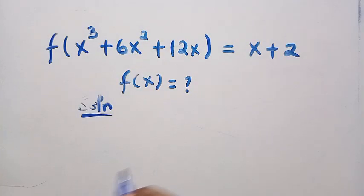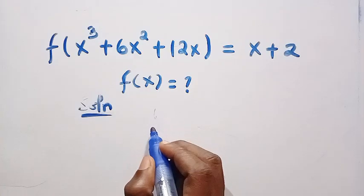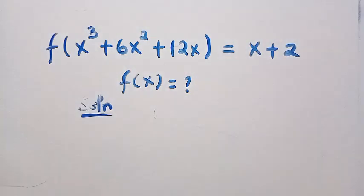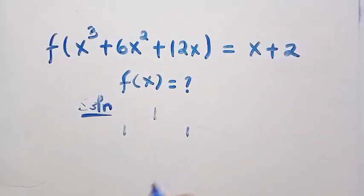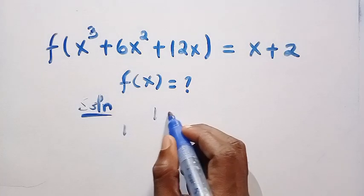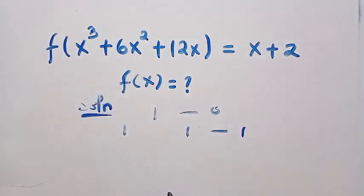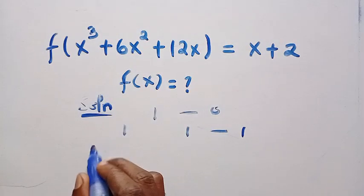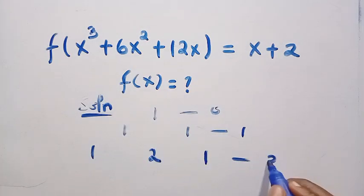Before that, let's consider the Pascal triangle coefficients. Suppose you have 1 — we are going to use this number to determine the coefficients of some terms based on the corresponding power. So we have 1, then 1 and 1 for power 1, then 1, 2, and 1 for power 2.